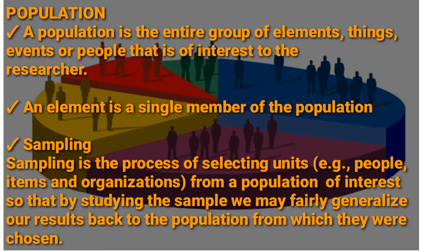Sampling is the process of selecting units from a population of interest, or the process of selecting a sample from a population. It can be people, items, and organizations from a population of interest, so that by studying the sample we may fairly generalize our results back to the population.